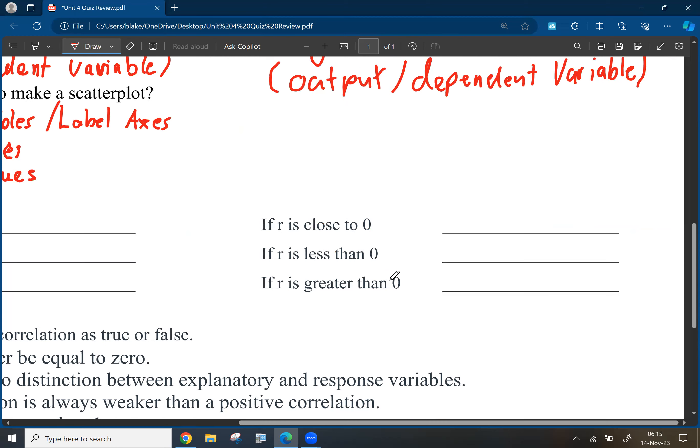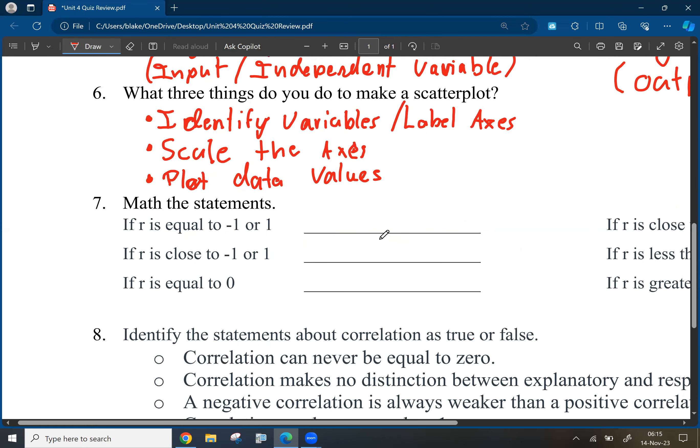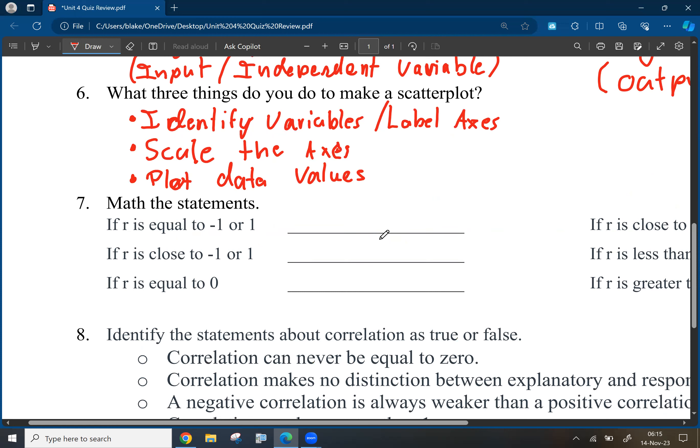All right. All right, so we have these six statements. We saw this as well in the notes. So hopefully, if you just kind of took your notes out, you could figure all this stuff out. But if R is equal to negative one or positive one, it is a perfect fit. If it is close to negative one or positive one, it is a good fit. If it is equal to zero, it is not linear.